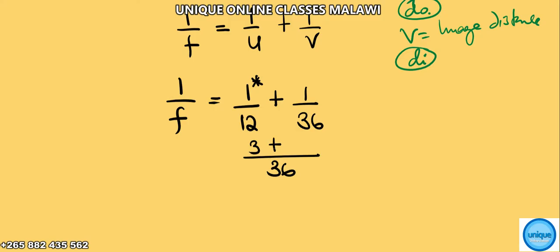36 divided by 12 is 3, so we have 3 here, then plus 36 divided by 36 is 1, so we get 1. So here we have 1 over f.